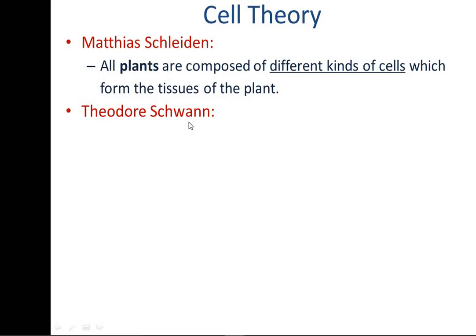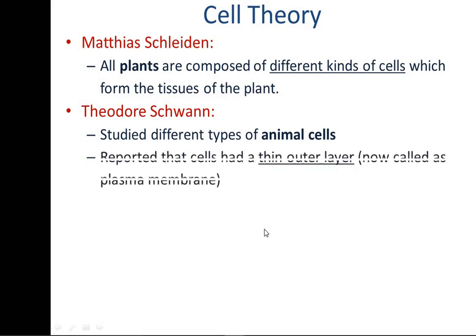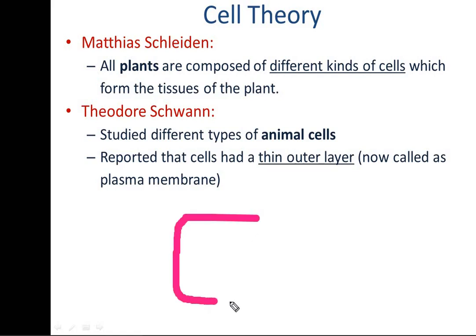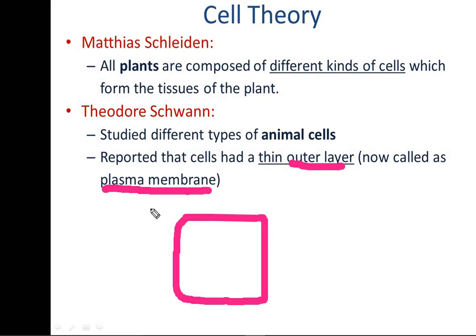A similar theory was proposed by Schwann, who studied different types of animal cells. He reported a unique difference between plant cells and animal cells. He observed that animal cells have a small or thin outer layer, which we now refer to as the plasma membrane.